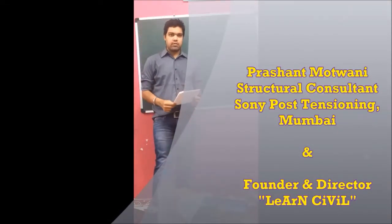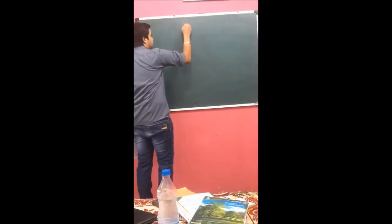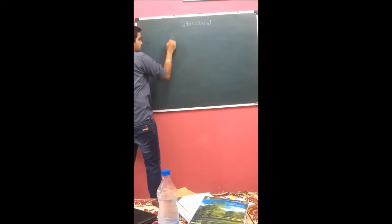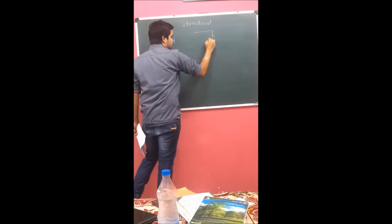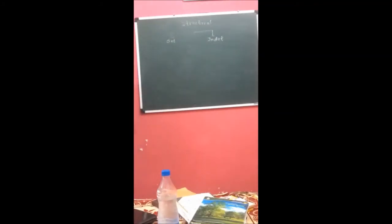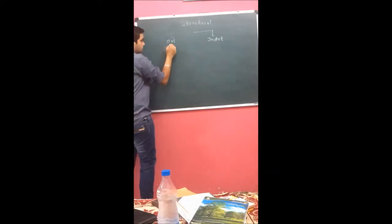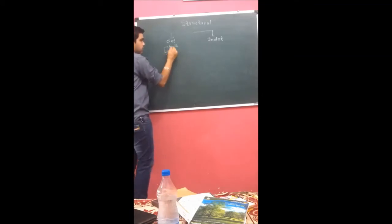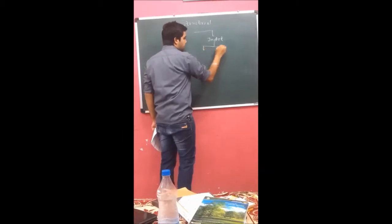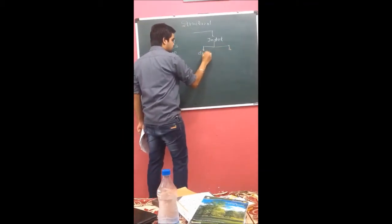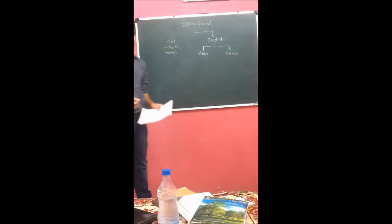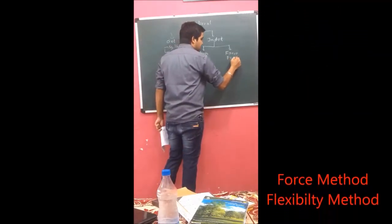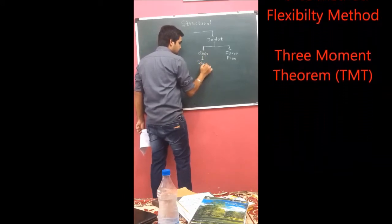Good afternoon. We are going to start a demo lecture on stiffness matrix. To start with stiffness matrix, it is necessary to understand how it comes into picture. In structural analysis, it is classified under two headings: determinate analysis or indeterminate analysis. For determinate structures like a simply supported beam or cantilever, equilibrium equations or compatibility conditions can easily solve the structure. For indeterminate structures, there are two classifications: the displacement method and the force method. Stiffness itself is a displacement method, as is the slope deflection method, whereas in the force method we have the flexibility method and moment distribution.